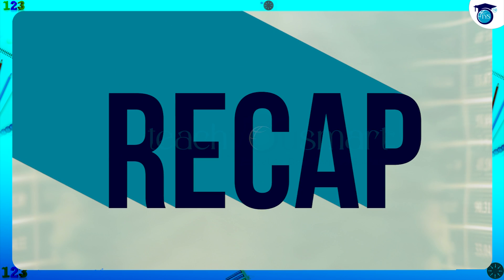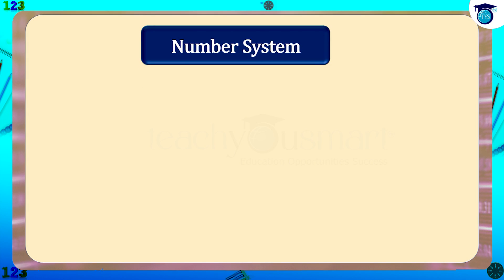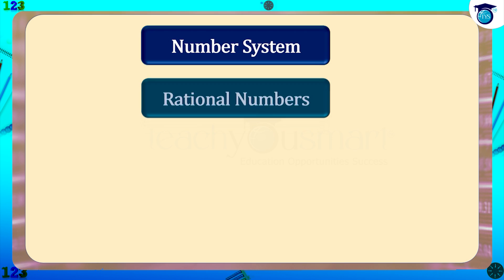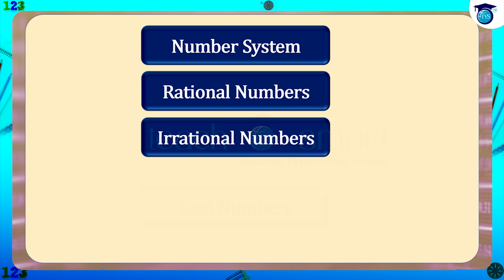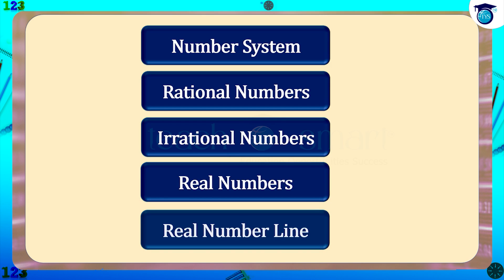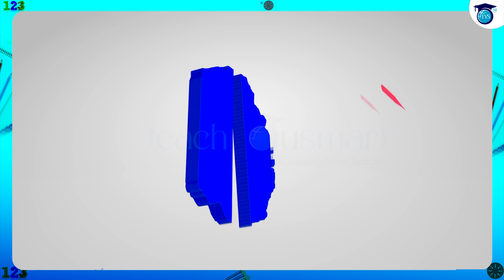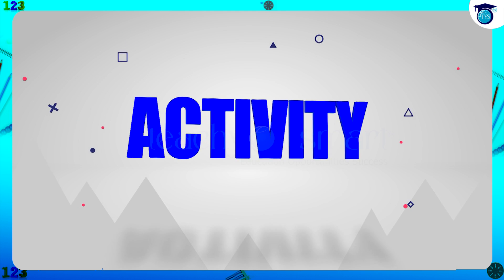Let's have a quick recap. Today we discussed the number system, which includes rational numbers and irrational numbers. They together form the real numbers, and then we learned about the real number line.